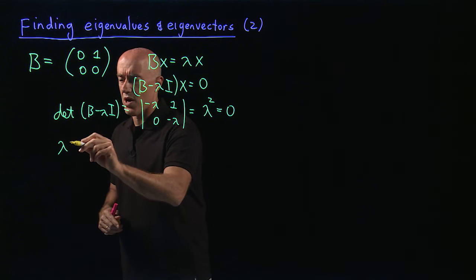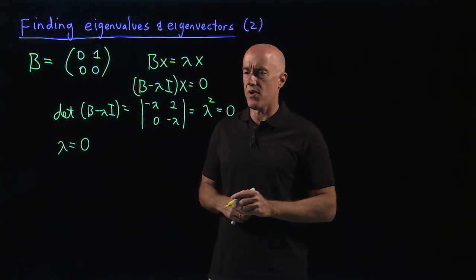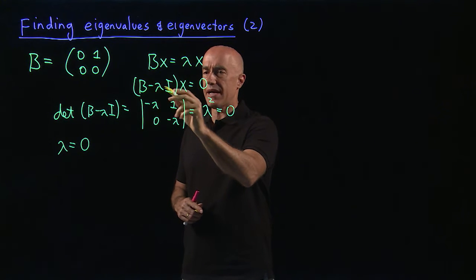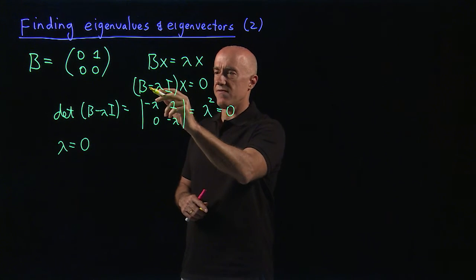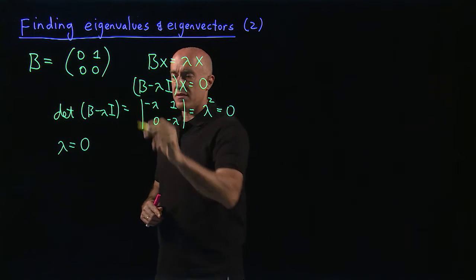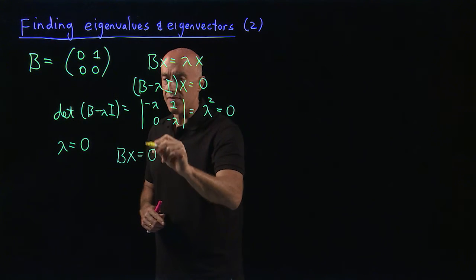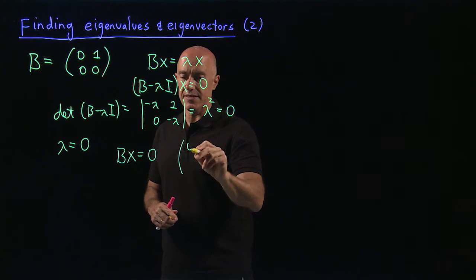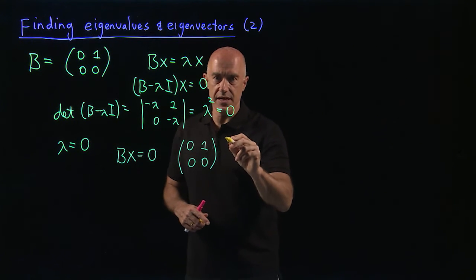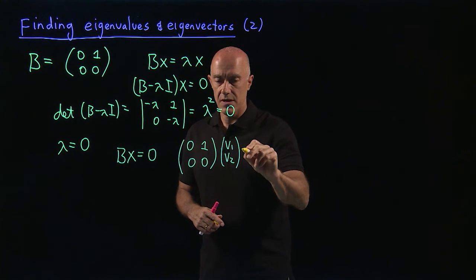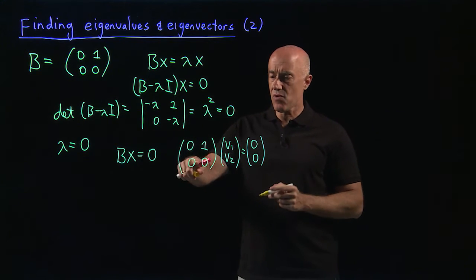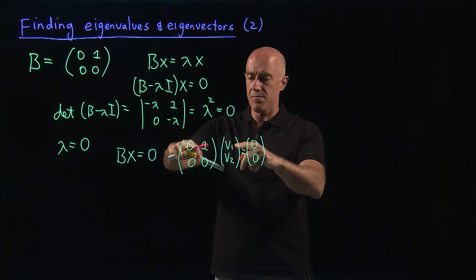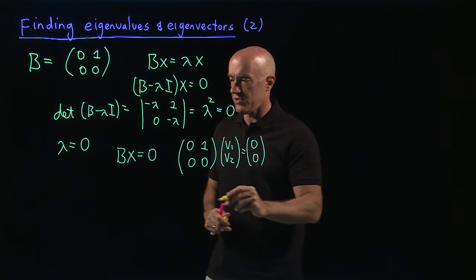There's only one eigenvalue — it's a repeated root of the characteristic equation — and that is lambda equals 0. To find the eigenvector, we solve B minus 0 times x equals 0, which is simply B times x equals 0. So the matrix [[0, 1], [0, 0]] times the eigenvector [V1, V2] equals 0. The second row gives 0 equals 0, which is not very informative.